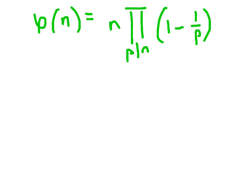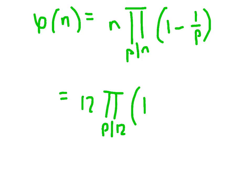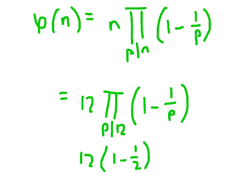There's another formula for the totient function. Looking at it with n=12: phi(12) equals 12 times the product over primes p dividing 12 — that's just 2 and 3 — of (1 − 1/p). With p=2 we get (1 − 1/2), and with p=3 we get (1 − 1/3). So that's 12 times 1/2, which is 6, times 2/3, which is 4 — again confirming phi(12)=4.